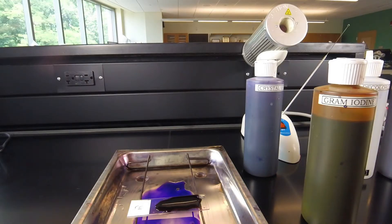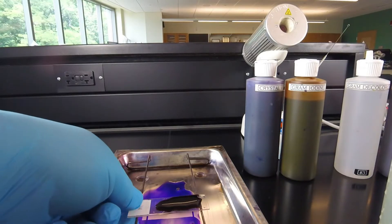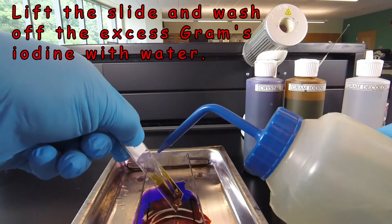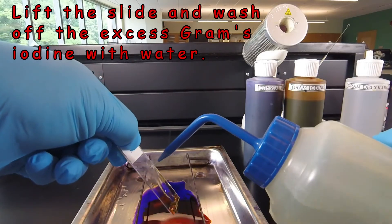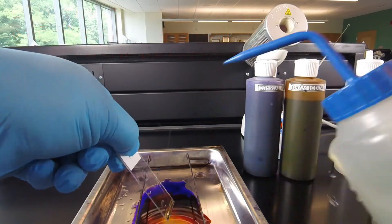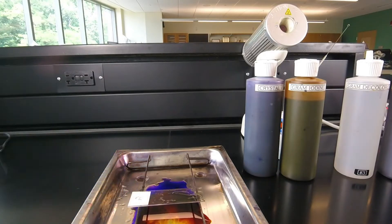One minute has gone by. We're ready to wash off the excess iodine using our deionized water. Again, we direct the water above the smear, let it run down over the smear watching the bottom of the slide. When the excess iodine has come off, we shake off the excess water, and we're ready to move on to the next step: the decolorization.